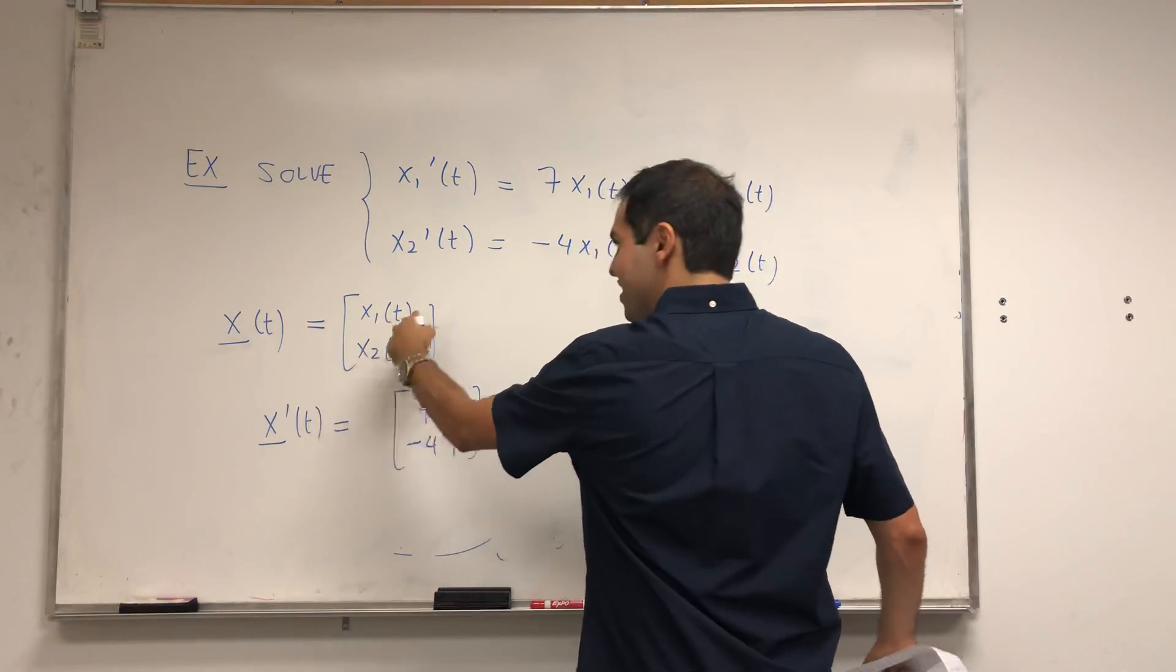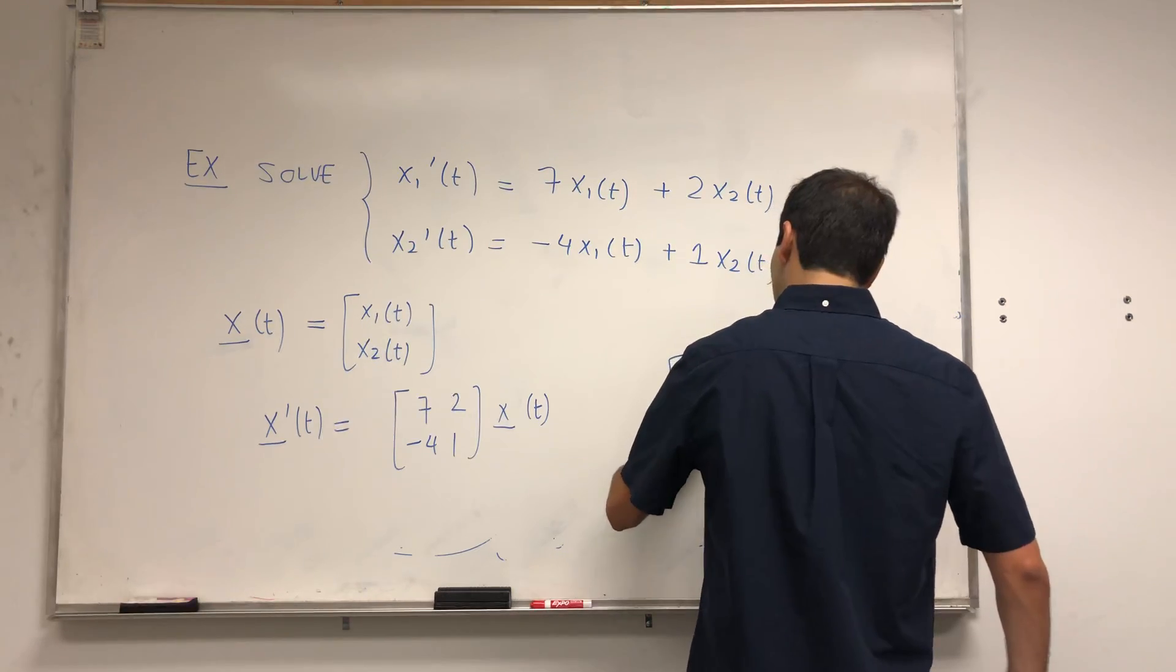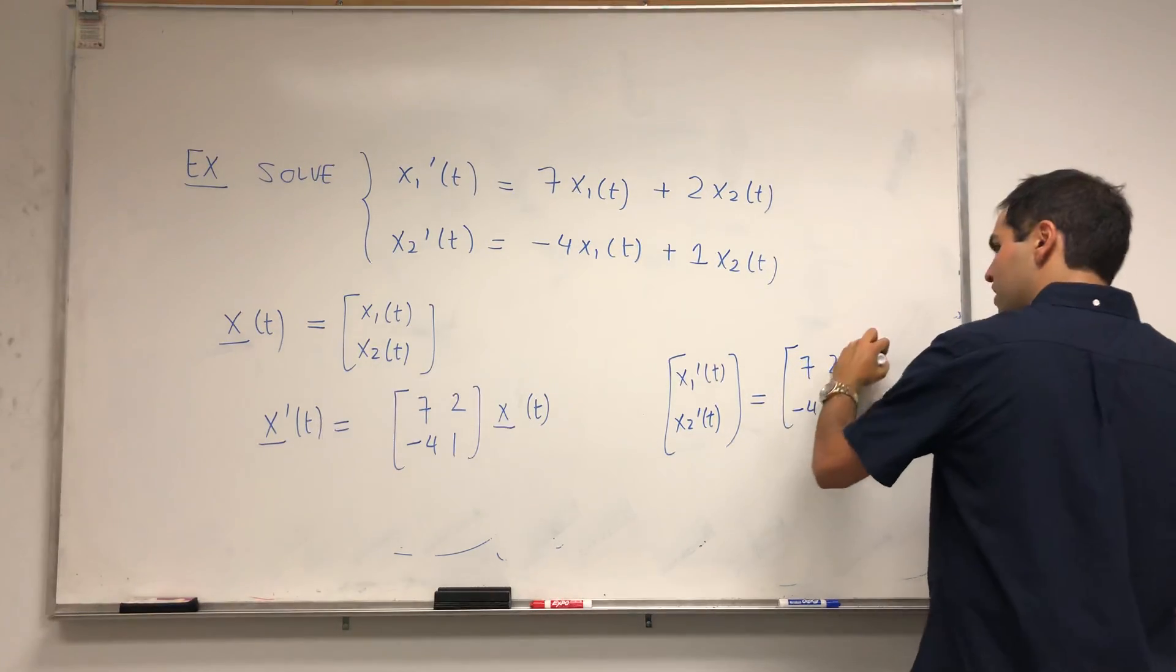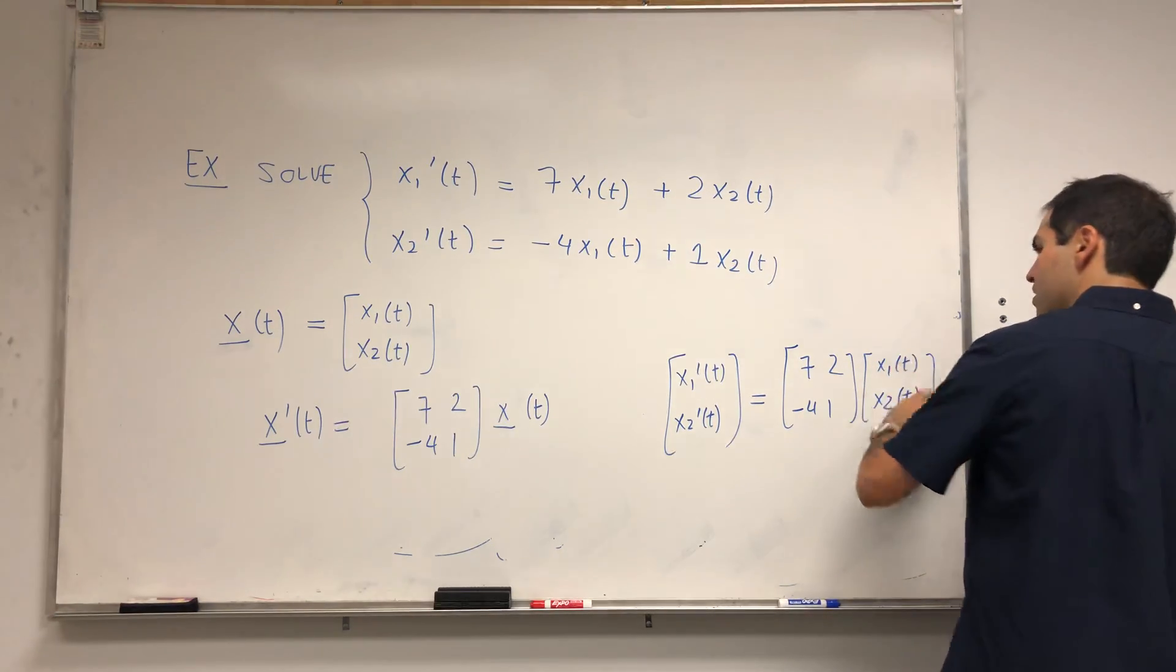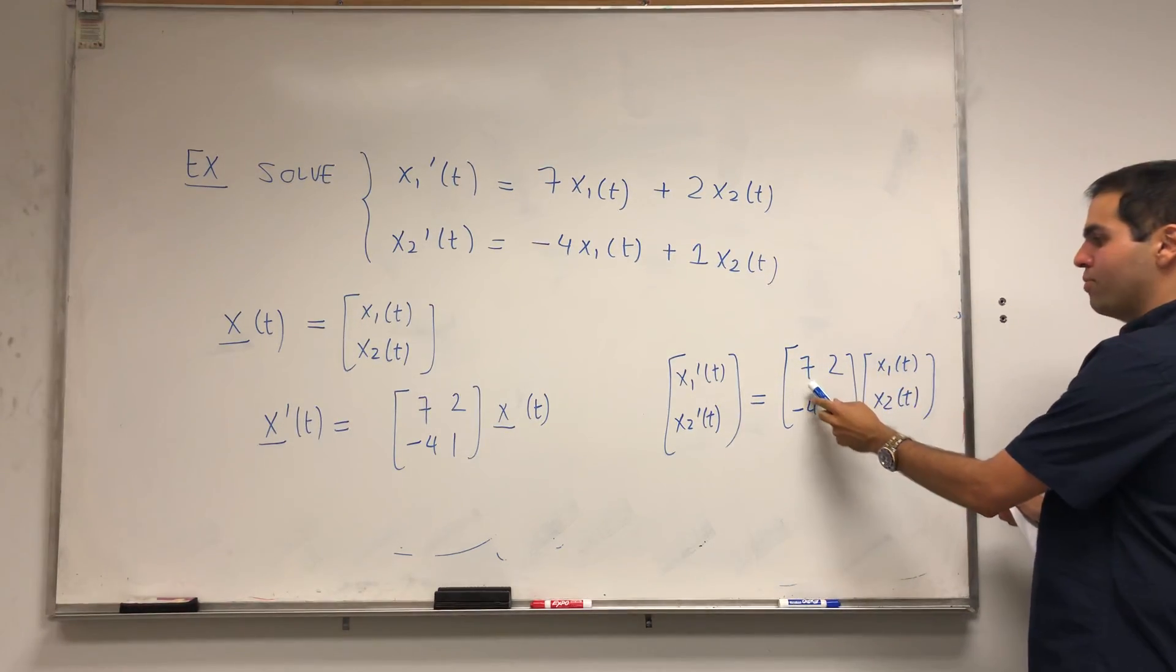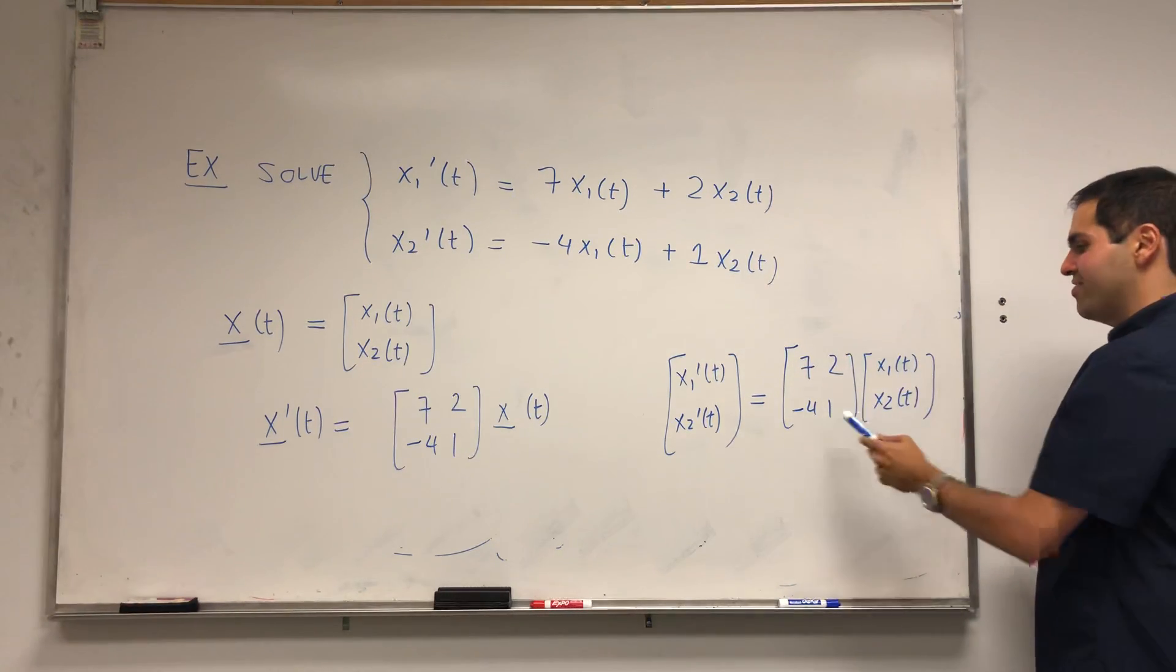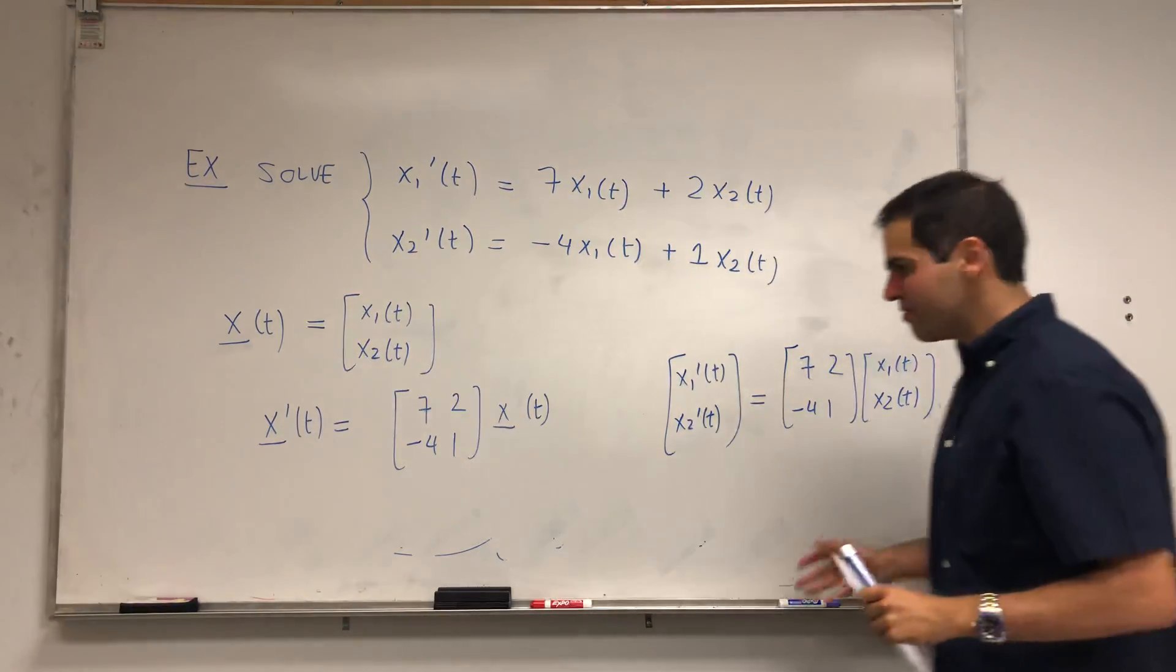What is x prime of t? It's just a vector of derivatives: [x1 prime of t, x2 prime of t]. Is this equal to [7, 2; -4, 1] times [x1 of t, x2 of t]? Yes, it is, because if you multiply this matrix by this vector, you get 7x1 plus 2x2 and minus 4x1 plus x2, which we have here as well.